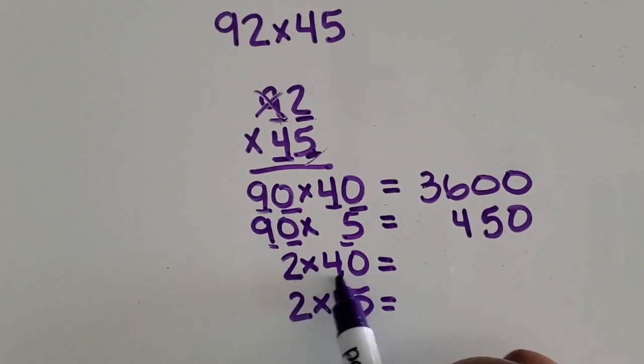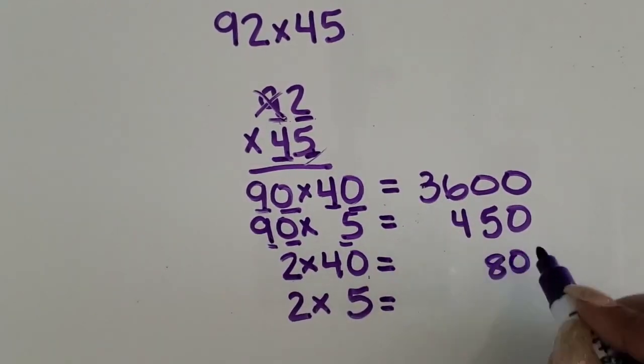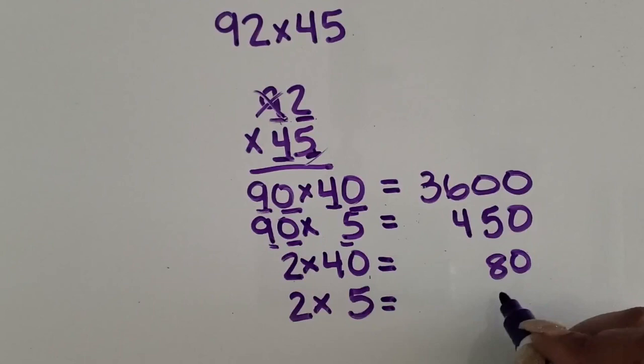Next, two times 40 is 80. I know that's a two-digit number. Two times five is 10.